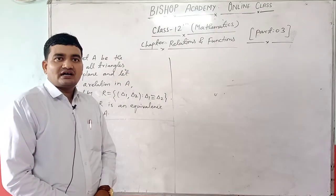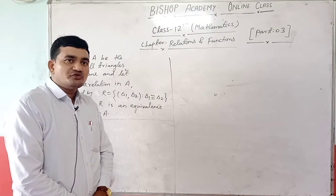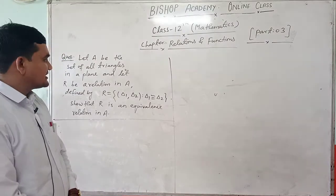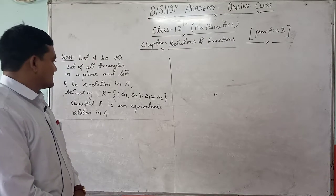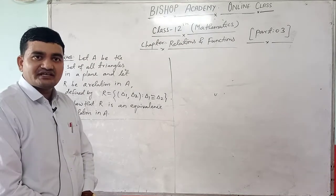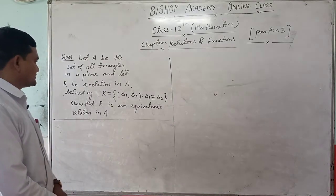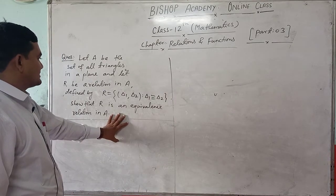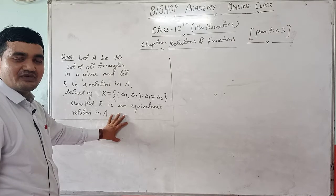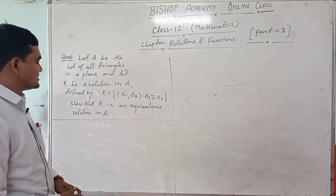A relation R is said to be an equivalence relation if it is reflexive, symmetric, and transitive. We will show reflexivity, symmetry, and transitivity.